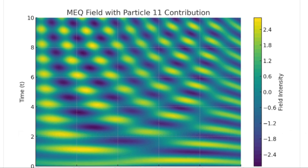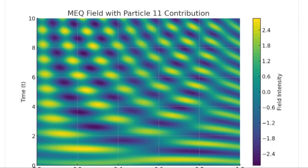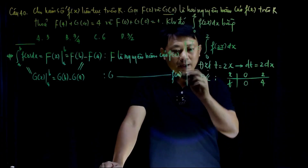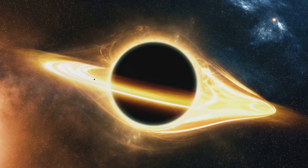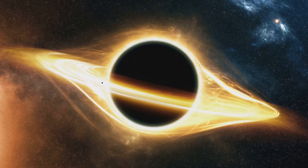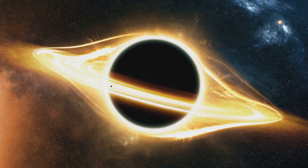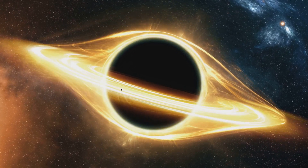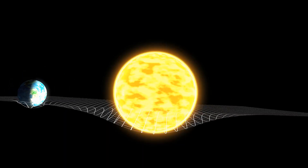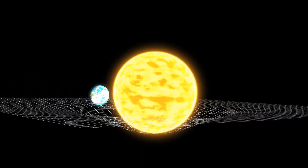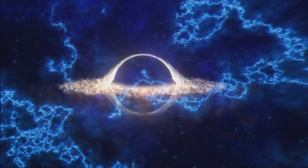The McGinty equation goes even further by including gravity. Einstein's theory of general relativity says gravity isn't a force, but a bending of space and time caused by mass and energy. The MEQ suggests this bending could also affect how zero point energy is spread out.